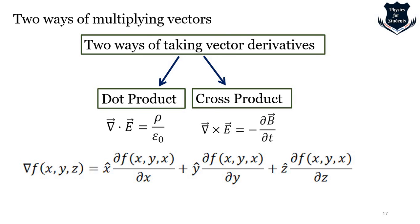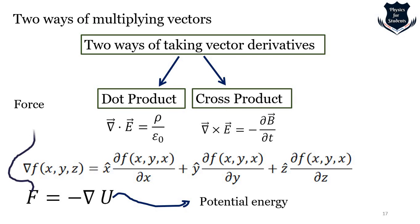The del operator is also useful outside vectors. If we treat it as a sum of x, y, and z components and multiply it by a scalar function, the function gets distributed — this is known as the gradient of the scalar function. It tells you the direction in which the function is changing most rapidly, and it is used in relating potential energy to force.